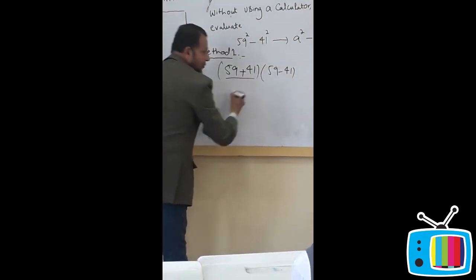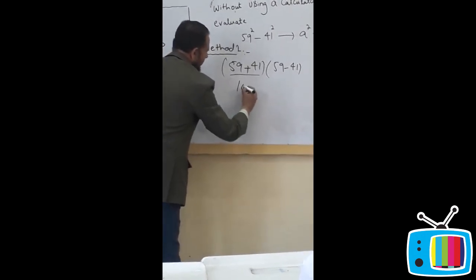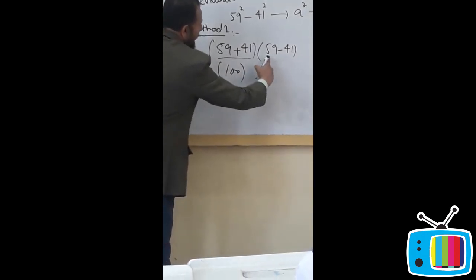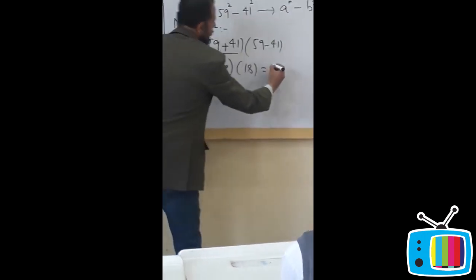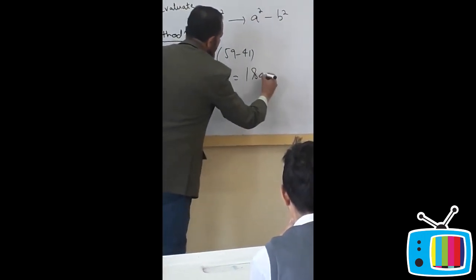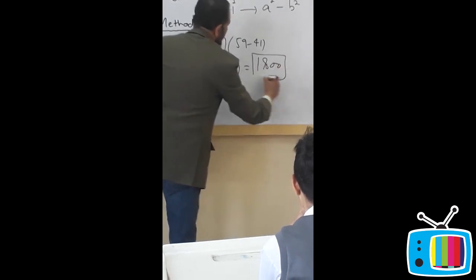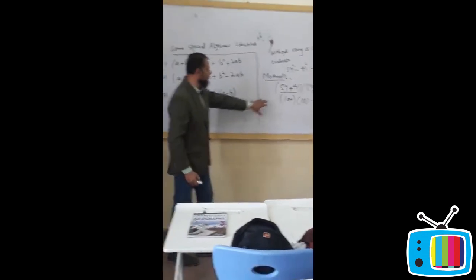Once you add these two numbers, you will get 100. And once you subtract, you get 18. So, the result is going to be 1800. We have already saw this. Now, exactly you've got the solution.